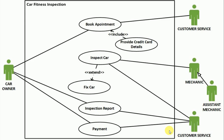If this is the scenario, what you see on the screen depicts it in the form of a use case diagram. The elements of a use case diagram include the system boundary — the box you see here. We have actors: the car owner, the customer service representative, the mechanic, and the assistant mechanic. The ovals are called use cases. We have six use cases in this diagram, and we also see include, extend, and associations — the lines connecting actors to use cases.